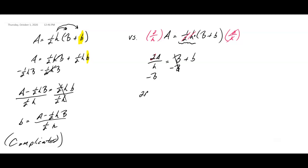So I get 2A over h minus big B is equal to little b. You can have either one of these two answers would work.